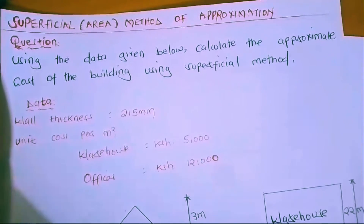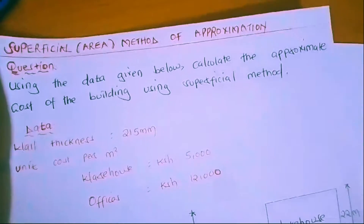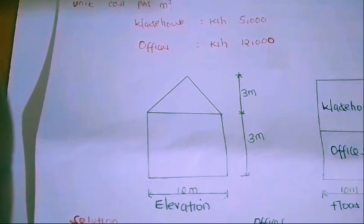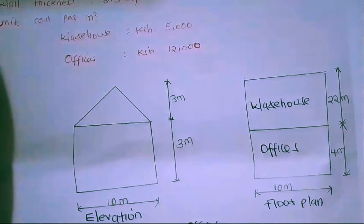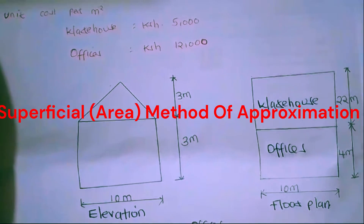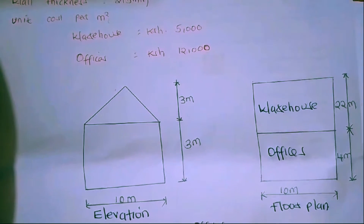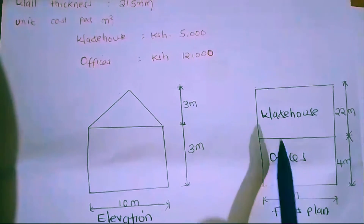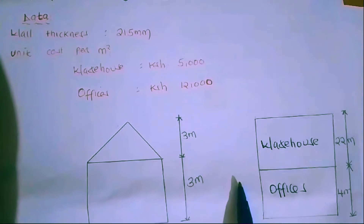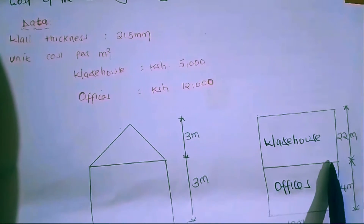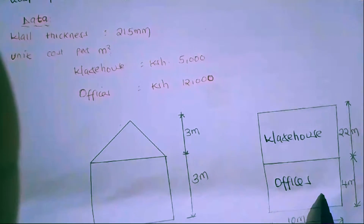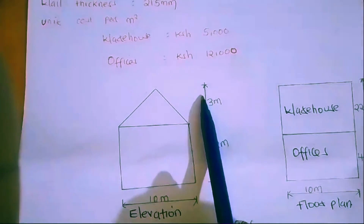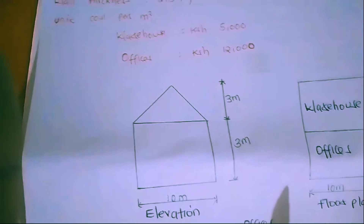Let's look at the building we need to estimate the approximate cost of. That is what we have for the elevation — that is how it looks. For the floor plan, we have the warehouse and the office. The width is 10 meters for both the warehouse and the office. The length of the warehouse is 22 meters, and for the office it is 4 meters. The height is 3 meters, and the height of the roof is also 3 meters.